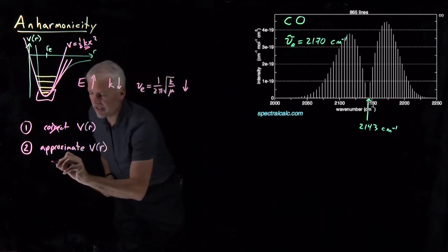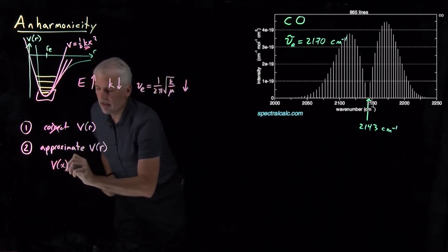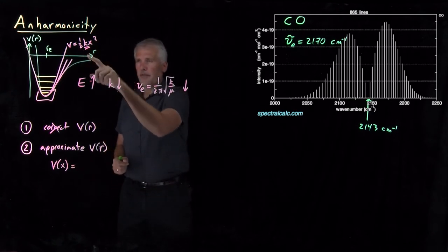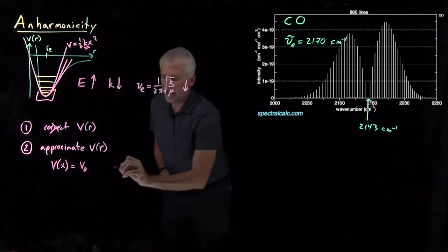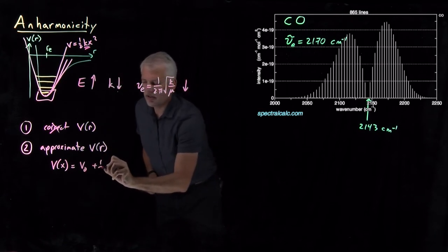For example, we could say the potential energy, remember where this one-half kx² came from, it was some constant term, some linear term that disappeared, some quadratic term.